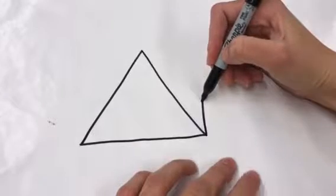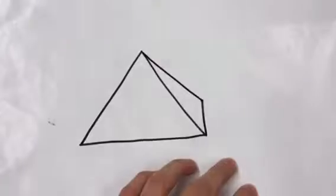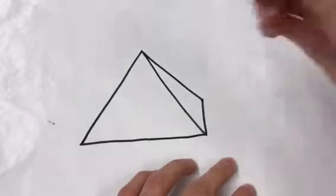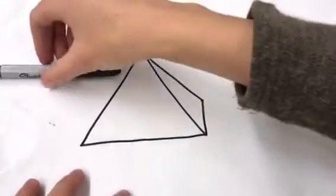And then you're gonna connect that line to the tip of your pyramid. And that makes our pyramid look three-dimensional, like it has four sides. So now what I'm gonna do is draw a horizon line because otherwise it just looks like it's floating in space.